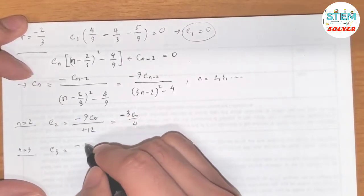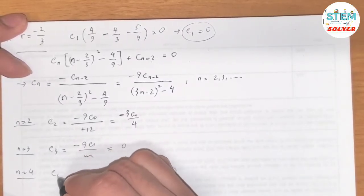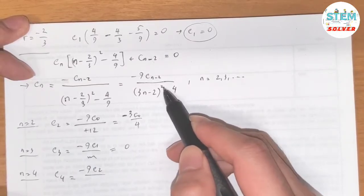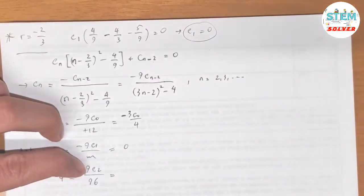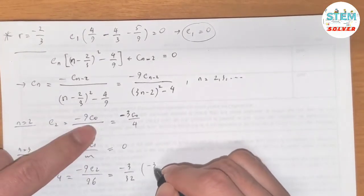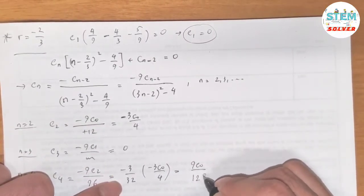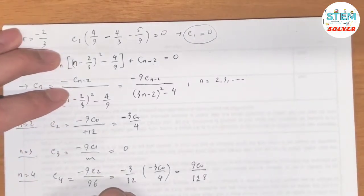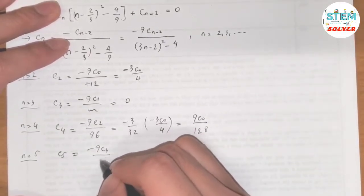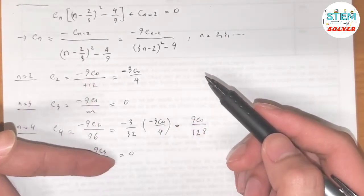For n=3: c3 = −9c1/(something) = 0 since c1=0. For n=4: c4 = −9c2/(4×3−2)²−4) = −9c2/(10²−4) = −9c2/96 = (−3/32)·(3c0/4) = −9c0/128. Actually simplifying: 9c0/128. For n=5: c5 = 0 since c3=0. So again all odd coefficients are zero.